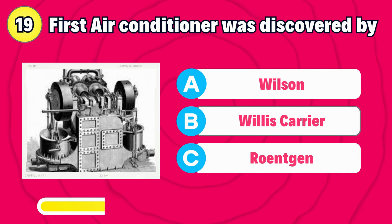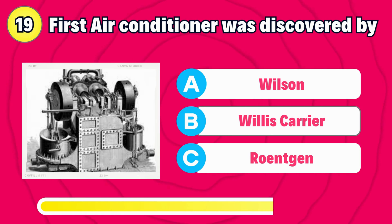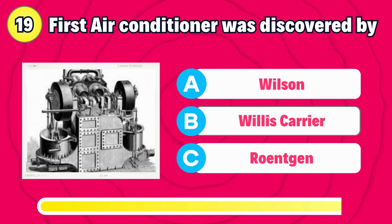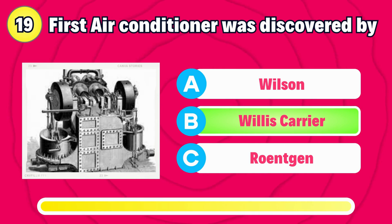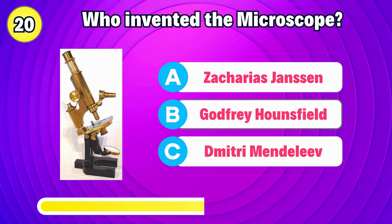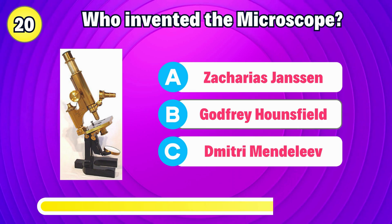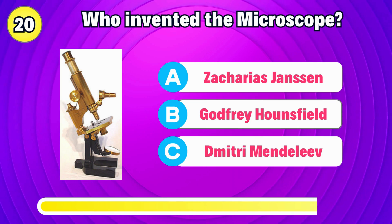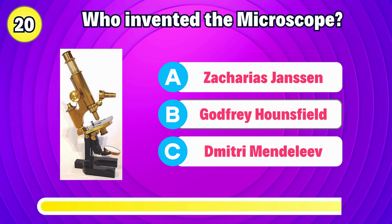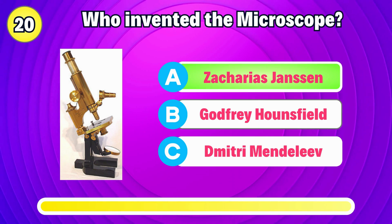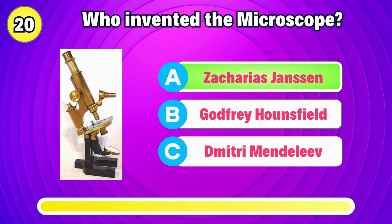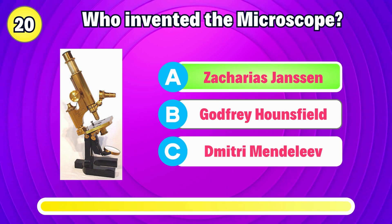The air conditioner was discovered by? Right, it's Willis Carrier. Who invented the microscope? Correct, it's Zacharias Janssen.